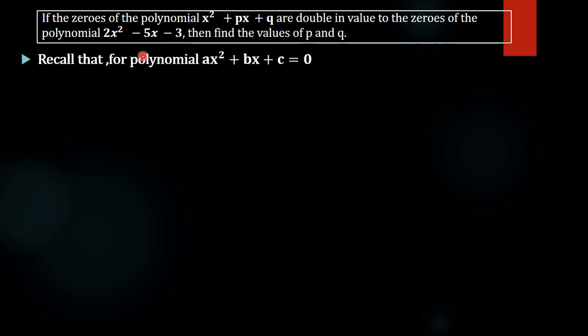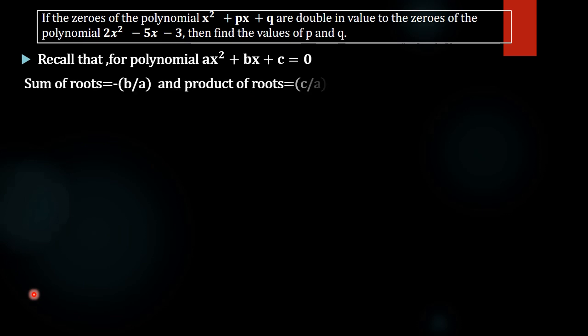For that, recall that for the polynomial ax² + bx + c = 0, sum of the roots equals minus b by a, and product of the roots equals c by a.